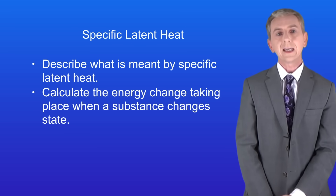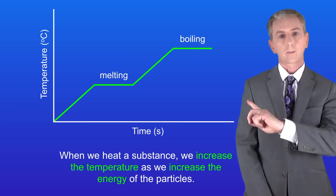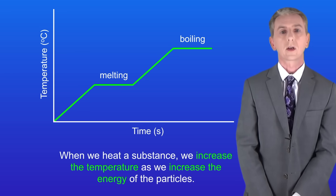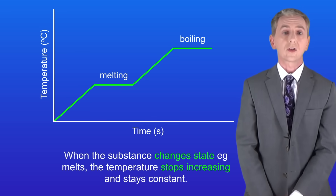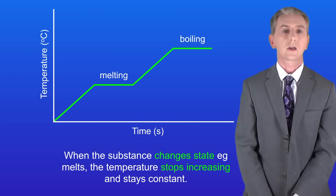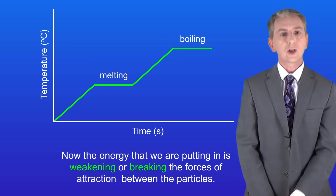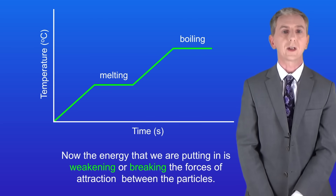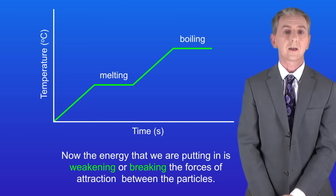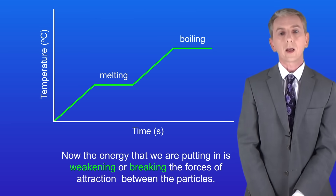In the last video we looked at heating graphs such as this one. We saw that when we heat a substance we increase the temperature as we increase the energy of the particles. However, when the substance changes state — for example melts — the temperature stops increasing and stays constant. That's because the energy we're putting in is weakening or breaking the forces of attraction between the particles. Scientists call the energy needed for a substance to change state the latent heat.